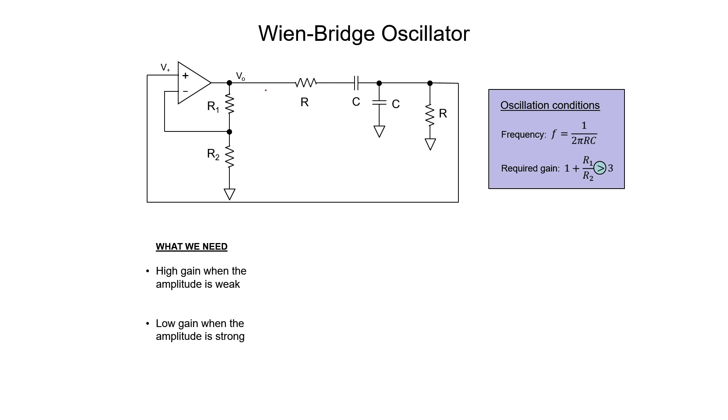As the signal builds and builds around this loop, eventually the amplitude will get so high that the amplifier won't be able to handle it. Therefore what we need is a high gain in the amplifier when the amplitude of the signal is weak because we want it to build up from the noise, but we want the amplifier's gain to drop back to exactly 3 when the amplitude is large. How are we going to do that? In fact, we need an automatic gain control circuit.